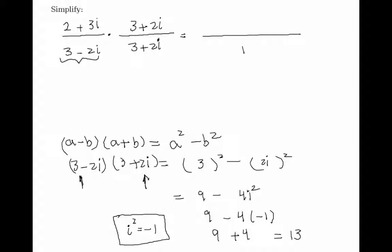This is how you would eliminate i and rationalize this. I don't have any i anymore at the bottom of the fraction, just by multiplying top and bottom by the conjugate of 3 minus 2i, which helped me eliminate i by using this property, difference of squares.